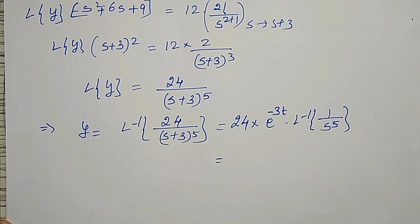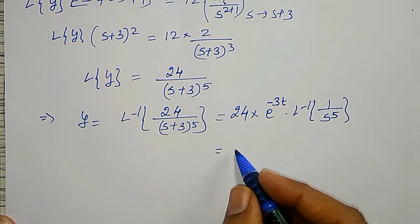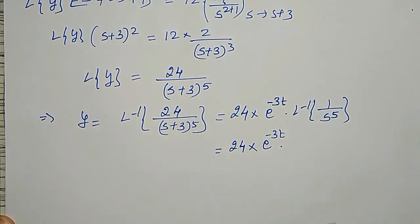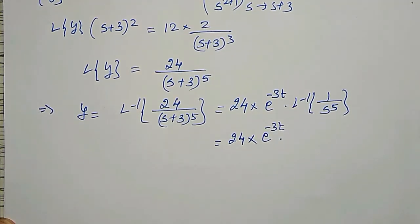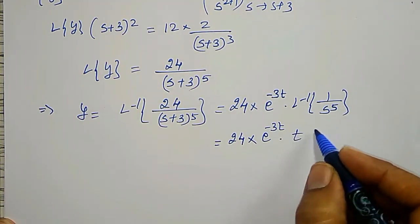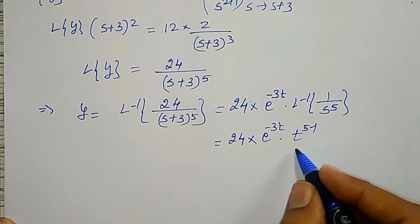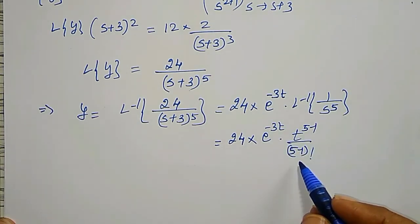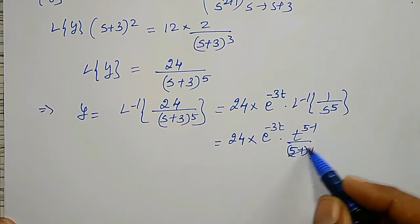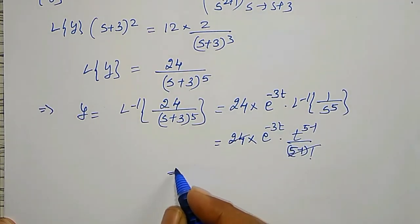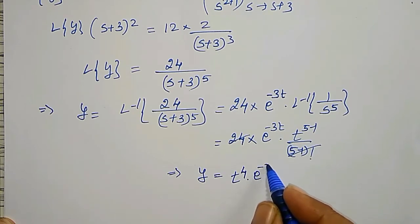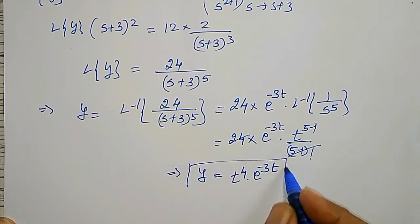This is my final answer. I can write 1/s^5 as t^(5−1) divided by (5−1) factorial, which is t^4 divided by 4 factorial. Since 4 factorial is 24, the 24s cancel, giving y = t^4 · e^(−3t) as the required answer.